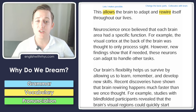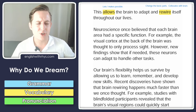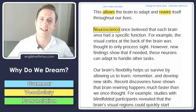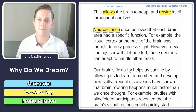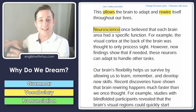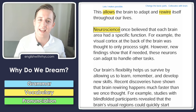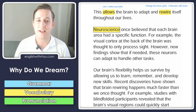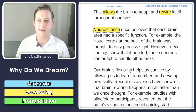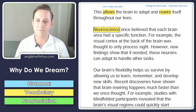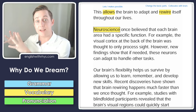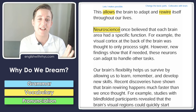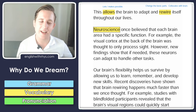Neuroscience once believed that each brain area had a specific function. This seems like a strange sentence. Neuroscience is a field of study — the experts who study neuroscience once believed that each brain area had a specific function. They once believed it, but they don't believe it anymore. So with just a few words, we're getting a lot of meaning: in the past, neuroscience believed this, but now they don't. The word 'once' is really helping us out there.